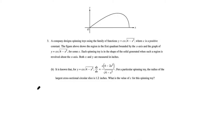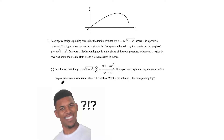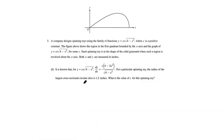In part (b), we're given the derivative of the function. For a particular spinning toy, the radius of the largest cross-sectional circular slice is 1.2 inches, and we need to find c. The largest cross-sectional circular slice refers to the revolution around the x-axis — the cross section is the line perpendicular to the axis. Along the curve, the largest cross section corresponds to where the function reaches a relative maximum.